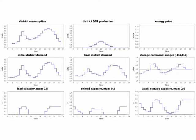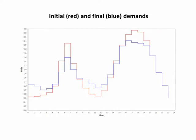As a result, it produces a schedule for flexibilities which respect their different constraints. Here, we superimpose the initial demand in red and the final demand in blue. The impact on peak load reduction is clearly visible.